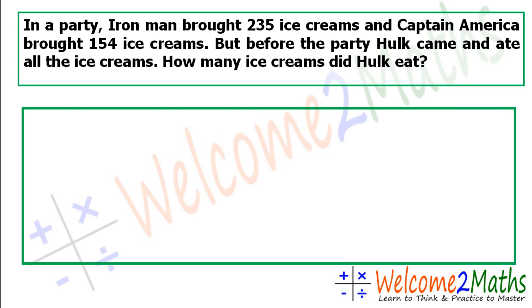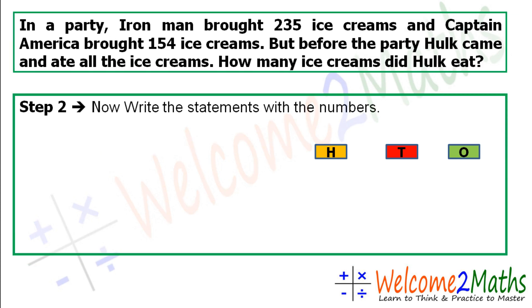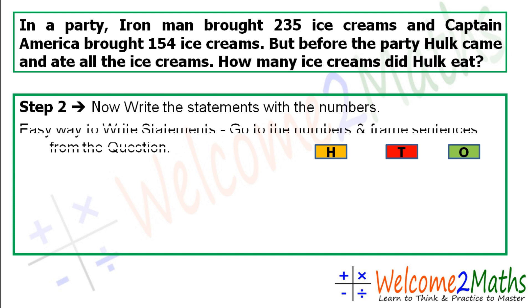Let's see the steps. Step number one: write the places for the numbers. Here we see three-digit numbers, so we write the places — O for ones, T for tens, and H for hundreds, because there are three-digit numbers here. Now step number two: write the statements with the numbers. An easy way is to go to the numbers and frame sentences from the question. Let's take the first number, 235. What is 235?